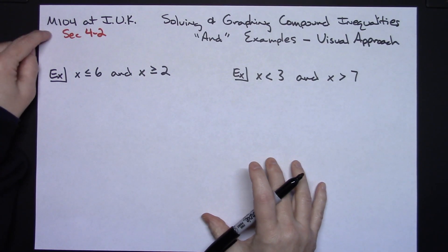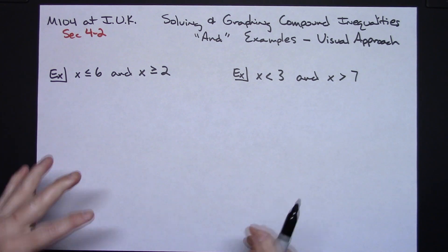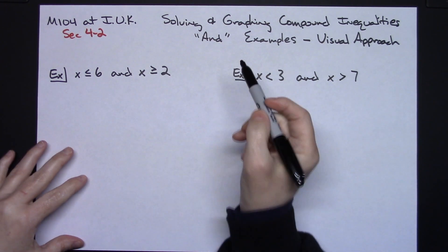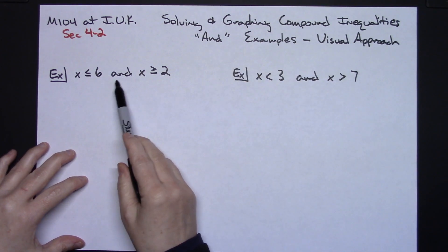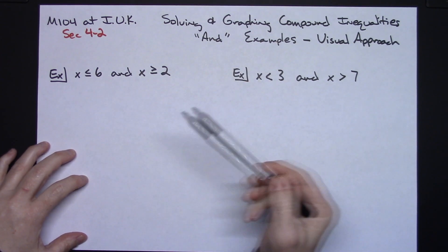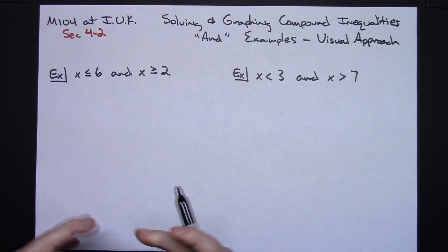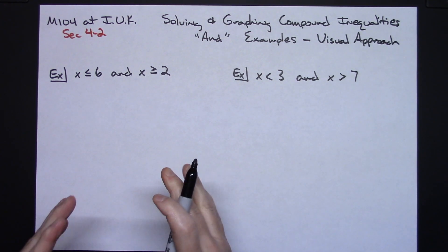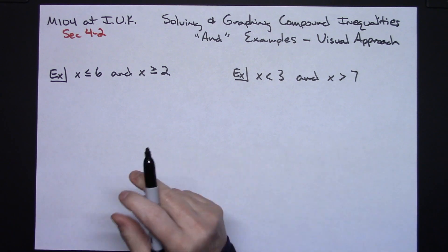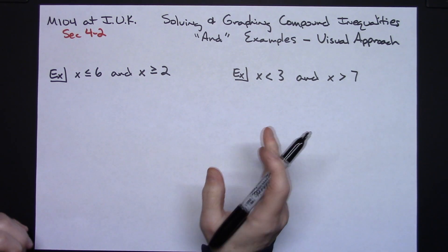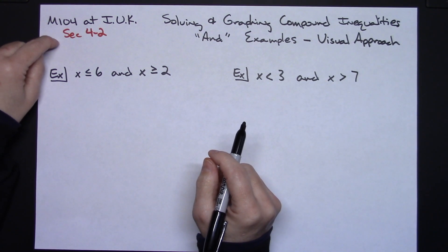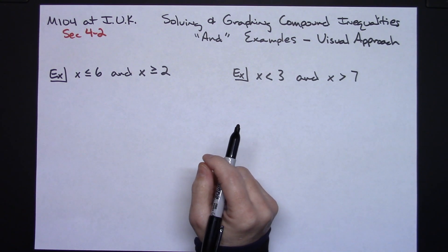In this video I'm going to be specifically making it for my M104 class at IUK. We're going to take a look at solving and graphing some compound inequalities, focusing on the AND examples. We're going to take a visual approach on a number line to give a basis before we start algebraically solving and graphing these. This information is coming out of section 4-2 for those students in my class.